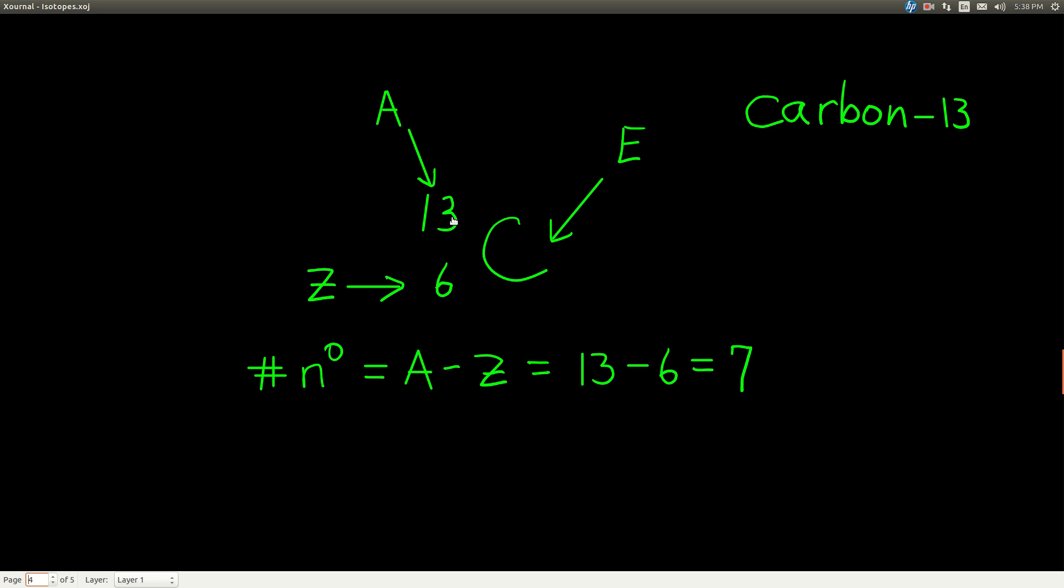In carbon-13, the sum of the protons plus the neutrons is 13, that's A. The protons are 6, and anything with 6 protons in its nucleus is going to be carbon. That means if we wanted to know how many neutrons there were in carbon-13, we'd just take A minus Z, or 13 minus 6, and we'd see that there are 7 neutrons in an atom of carbon-13.